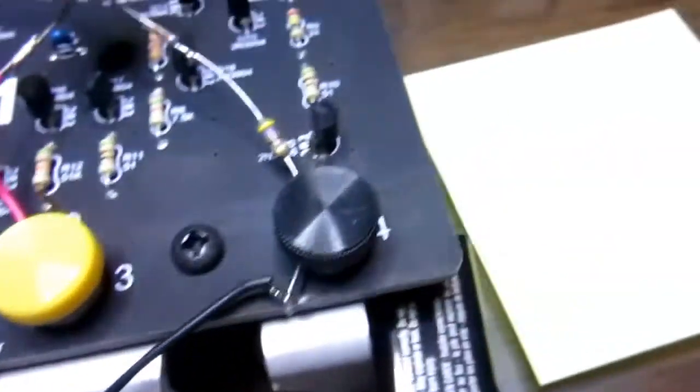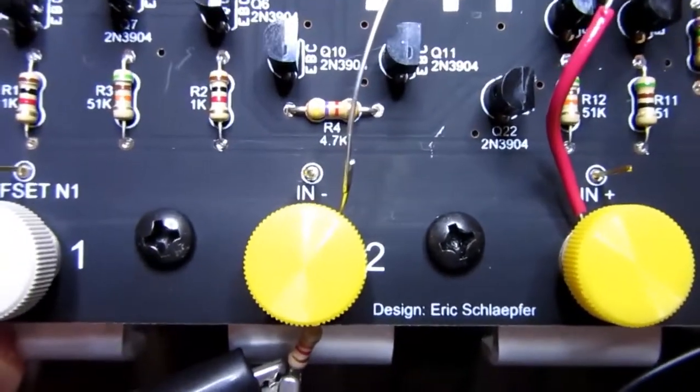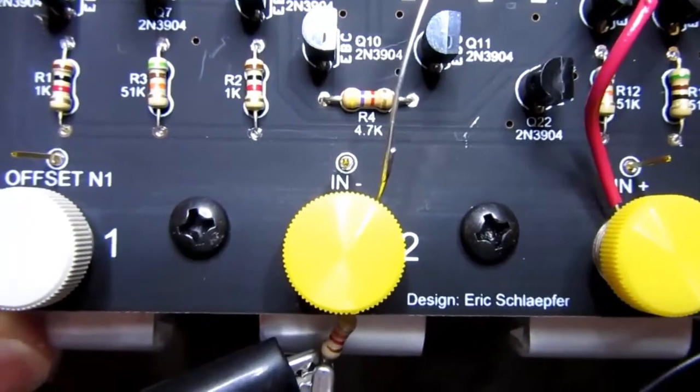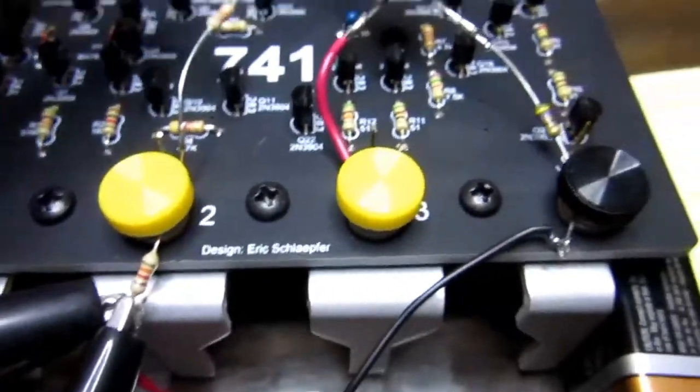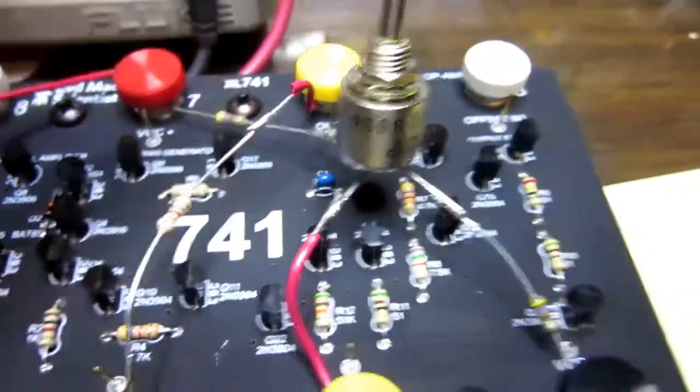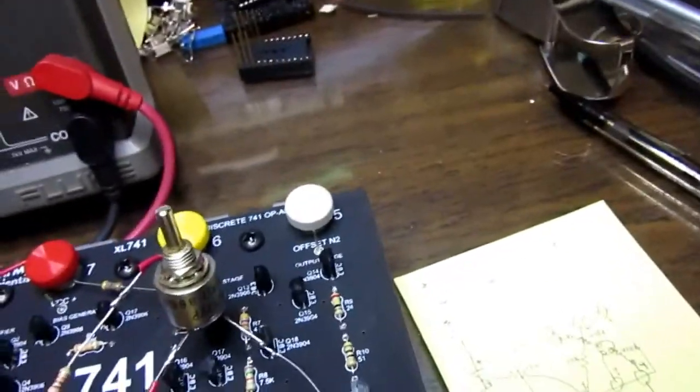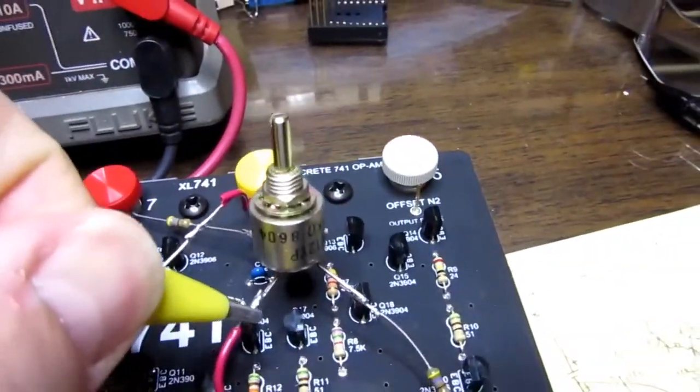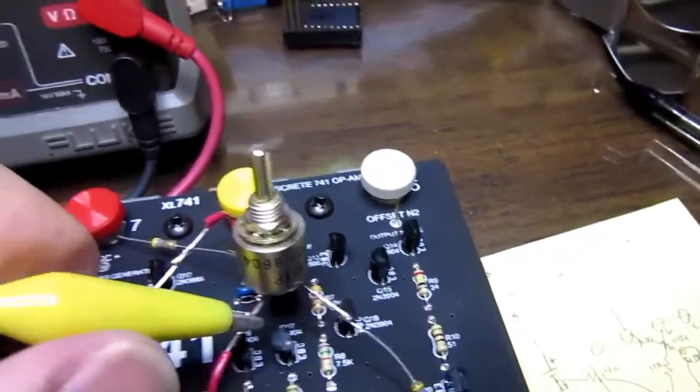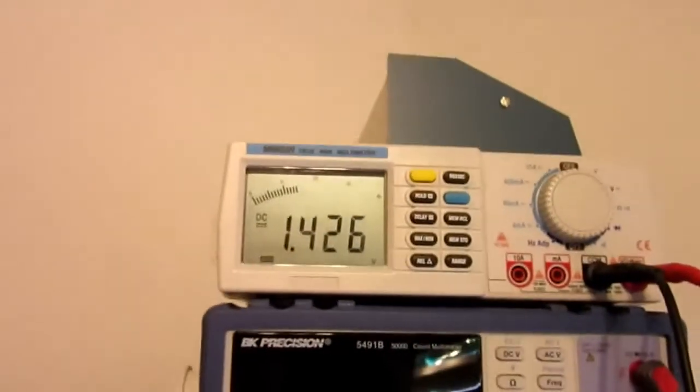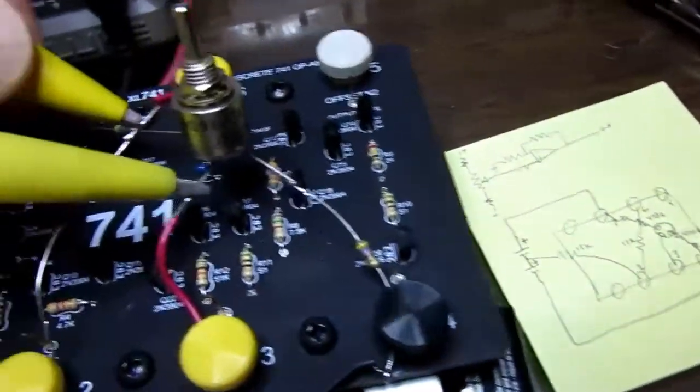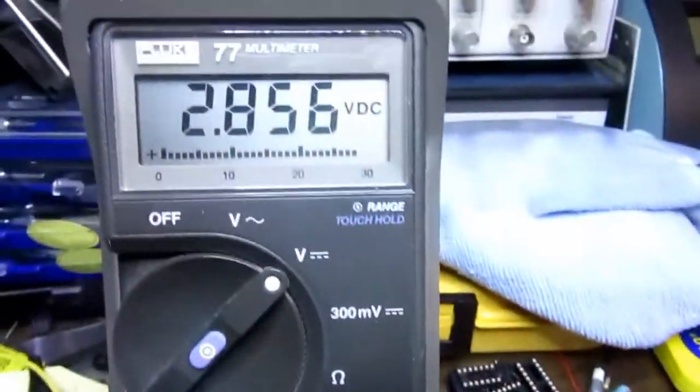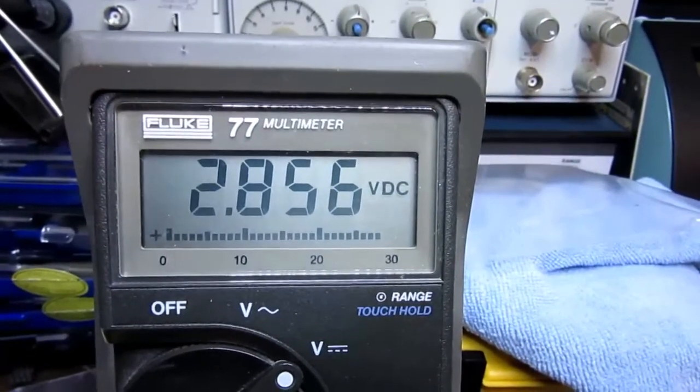The wiper of the pot goes directly to the plus input, the non-inverting input, whereas the junction of the feedback and ground resistors is on the minus input, or inverting input. This point here is the output of the circuit. So the first thing I'm going to do is clip a voltmeter onto the output of the pot. And I can see up there that I've got about 1.4 volts.